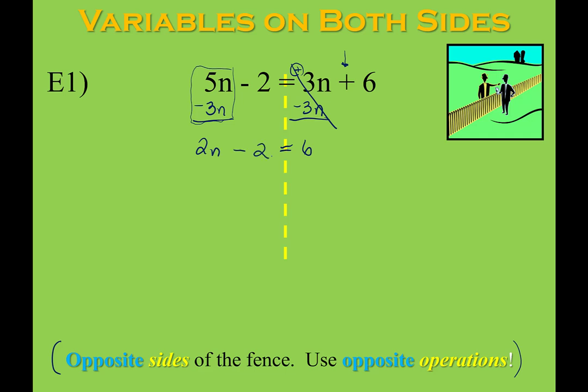Bring down the minus 2 because we haven't done anything with that yet, and after that we just had a two-step equation. Now I want to stress that we did not have to start that way. If you wanted to subtract 5n from both sides, or add 2 to both sides, or subtract 6 from both sides — there were actually four different things you could do to start this problem. There isn't one right thing to do; there are multiple right things to do, and that's okay.